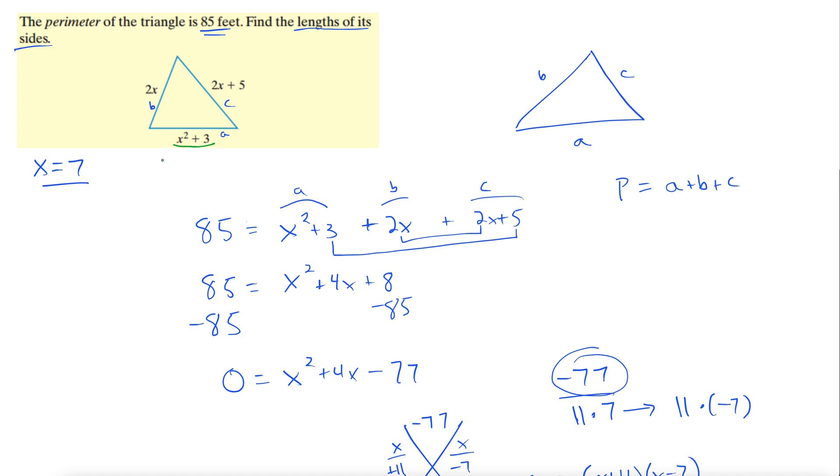Let's switch over to green here. So this side, we would have 7 squared plus 3. 49 plus 3 is 52, and our unit is feet. 52 feet for that side down there. Here we would do 2 times 7 plus 5. 14 plus 5 is 19 feet. Then over here we do 2 times 7, which is 14 feet. There's our third side. So 14, 52, and 19 feet.